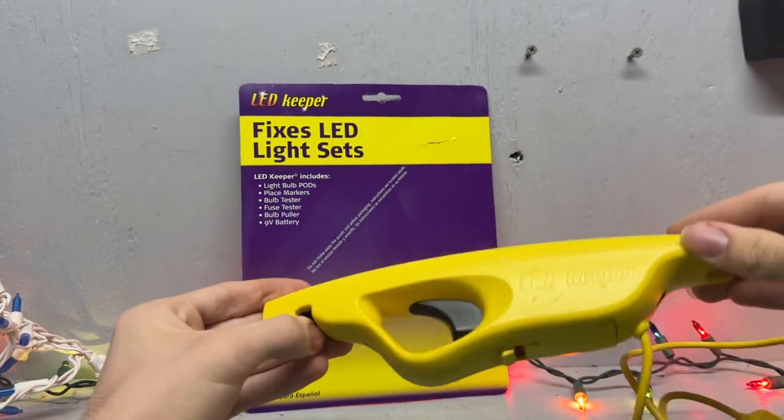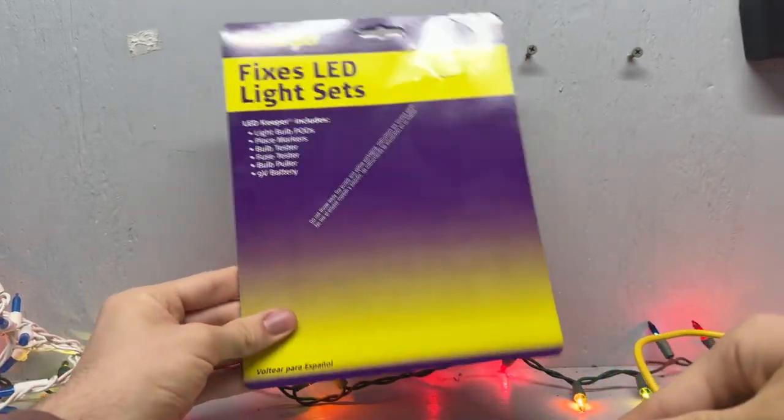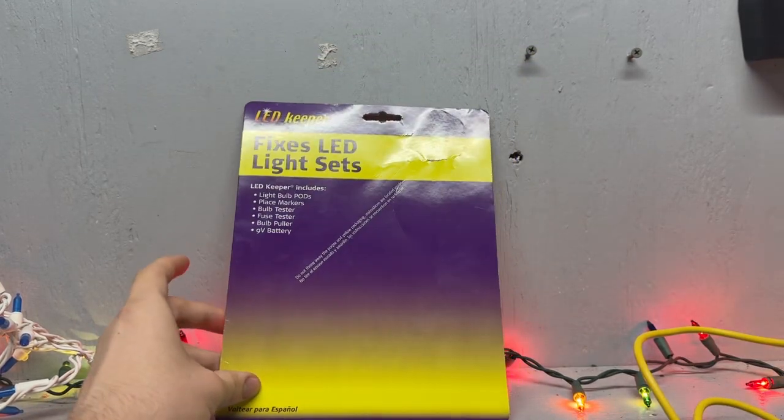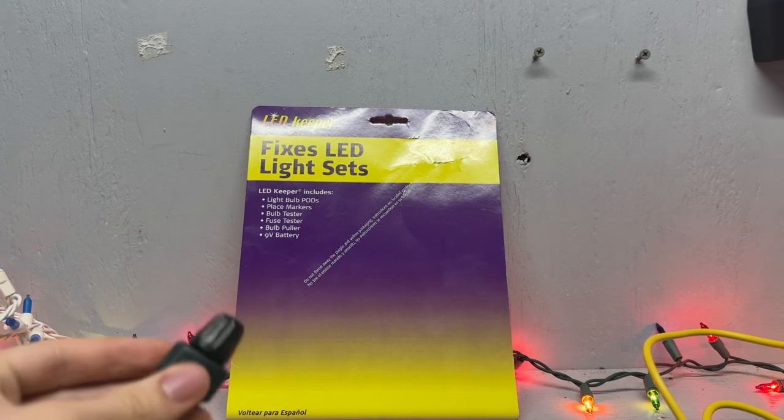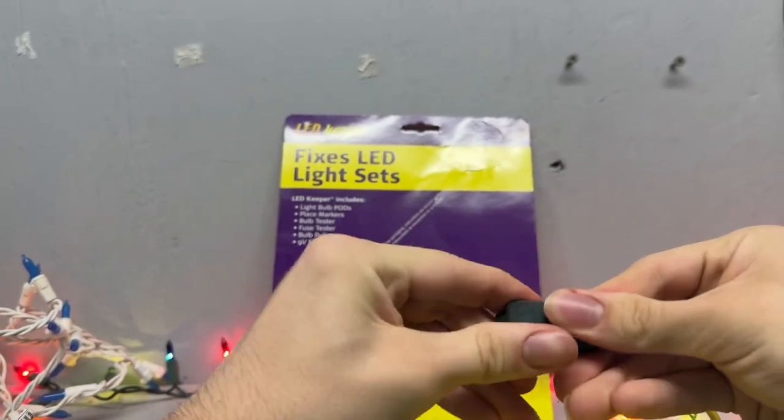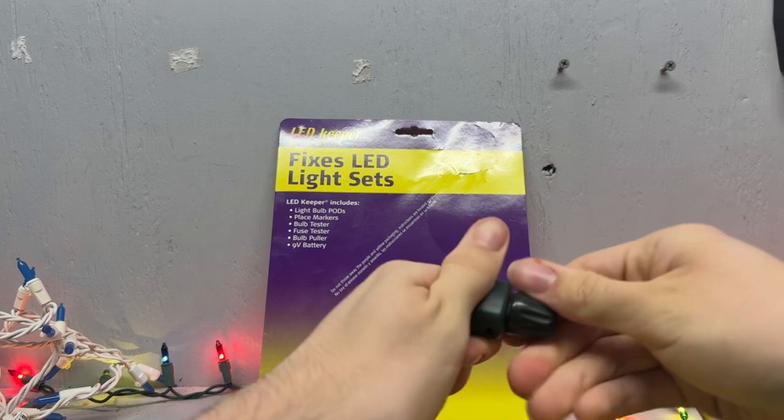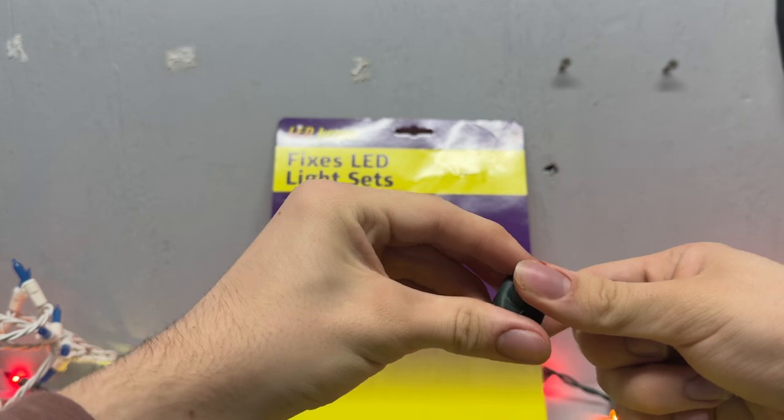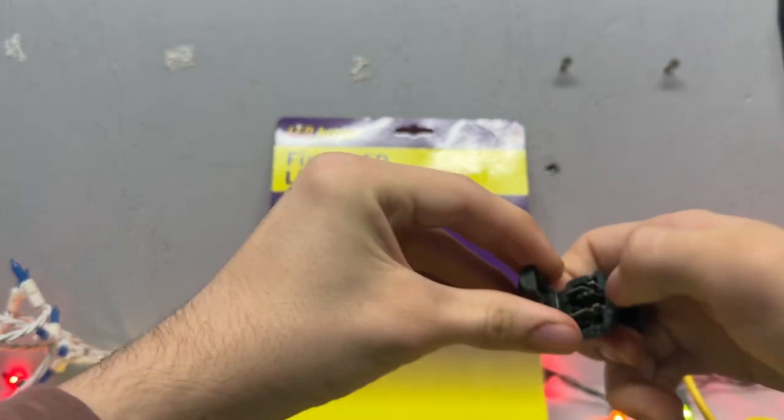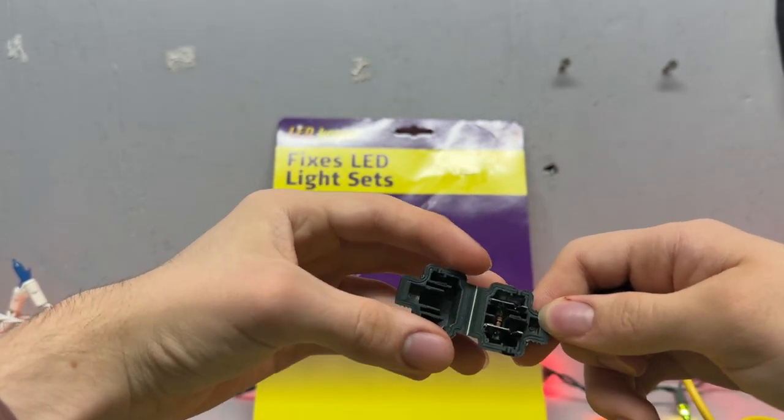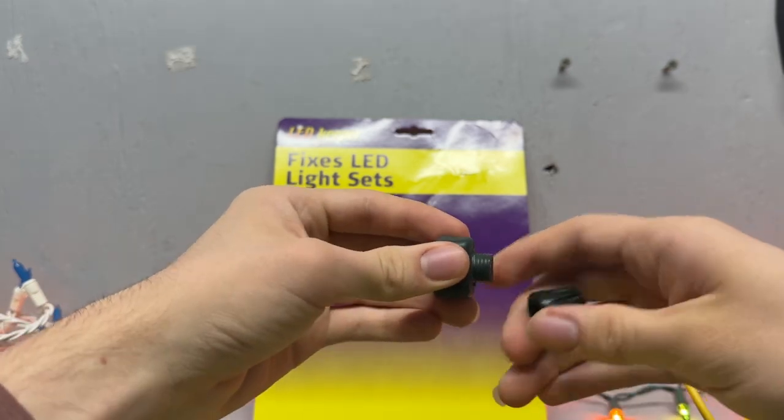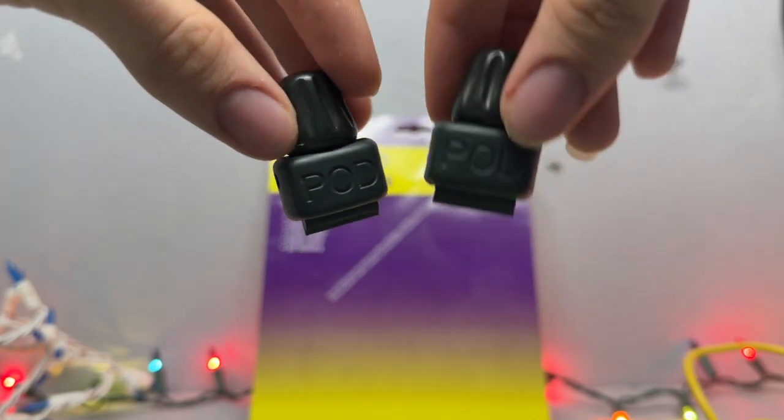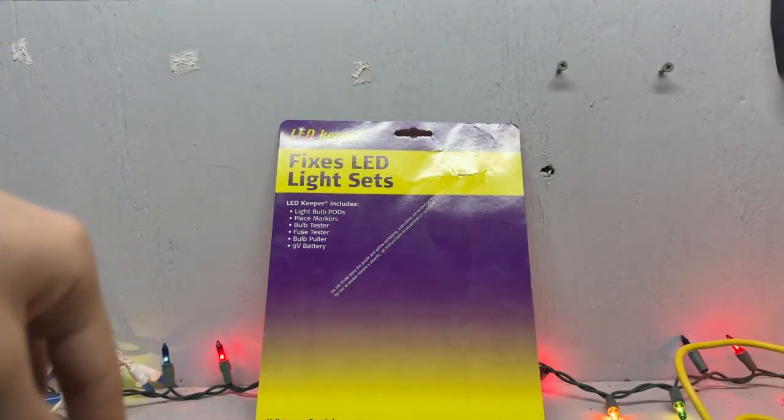So I'm going to show you some of the stuff. First of all, this is kind of a package, but it's also the instructions. So it includes some pods. If you have a non-replaceable light string, you put this in its place, and inside, if I can open this up, it says pod on it. You see it kind of splices through the wires, and there's a resistor inside. It comes with two of those in the package, and you can buy more if needed. I haven't used any yet.